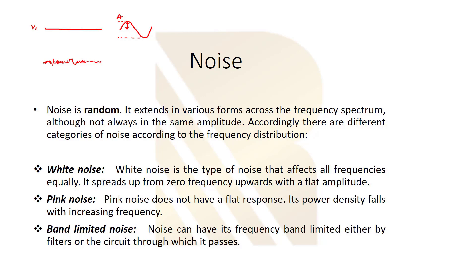We have different kinds of noise. We have white noise, pink noise, and band-limited noise. White noise is a type of noise that affects all frequencies equally — the amplitude of the noise is constant for all frequencies. It's the same at one gigahertz as it is at two gigahertz; amplitude does not change with frequency.